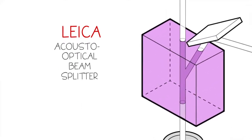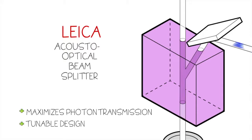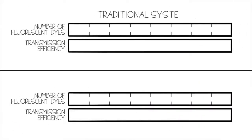Leica's AOBS provides an innovative approach to beam splitting that maximizes photon transmission through its flexible and instantly tunable design. Typical beam splitters, such as dichroic filters, are designed to separate a limited number of laser excitation lines from a sample's fluorescence emission spectrum.